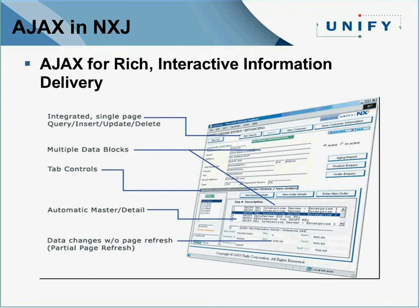This slide shows all the pieces of an NXJ form — it describes what makes it very client-server-like, including data regions, tab controls, master-detail behavior, AJAX capability as you do master-detail relationships, and built-in functionality for query, insert, update, and delete. These are all the functionalities of NXJ, as well as how we make it so your users don't see screens flicker and flash as they navigate records and update data.